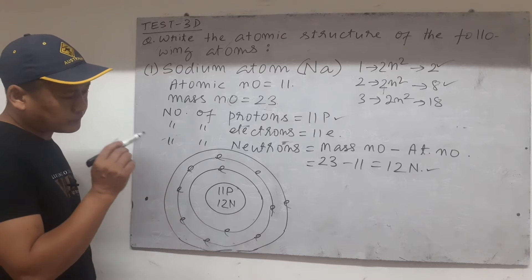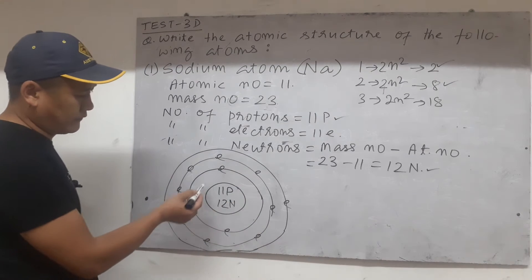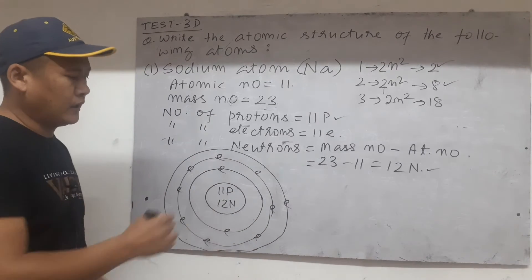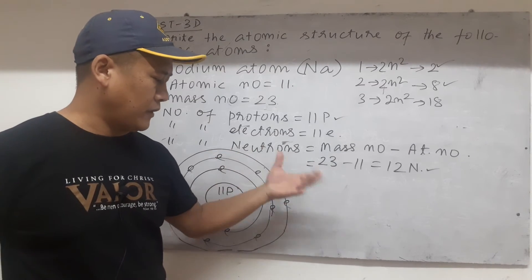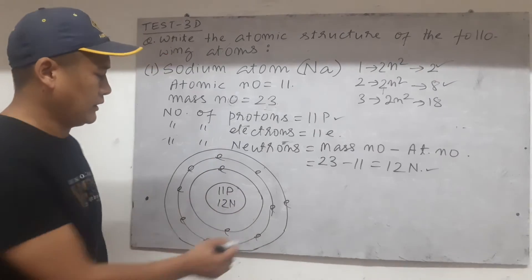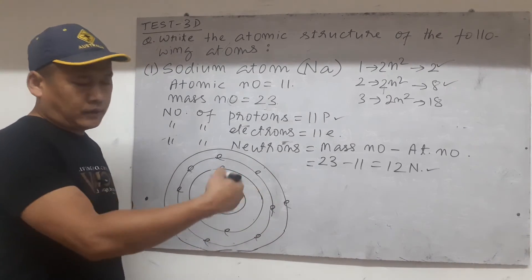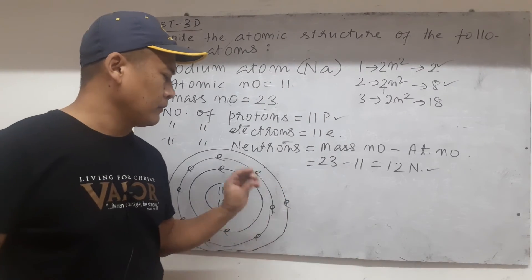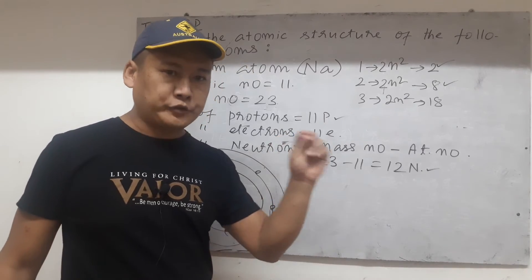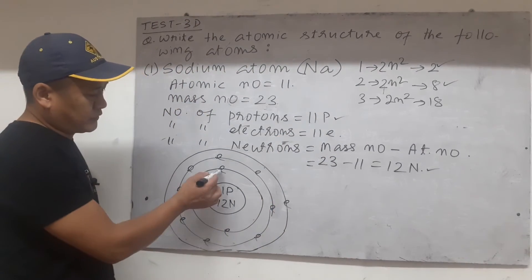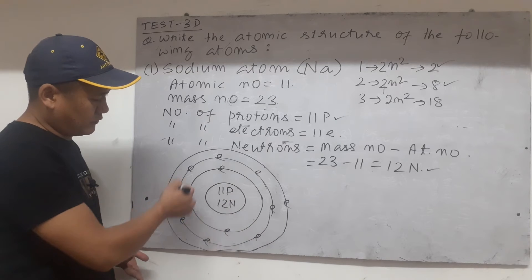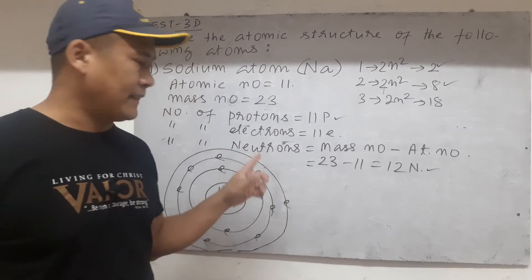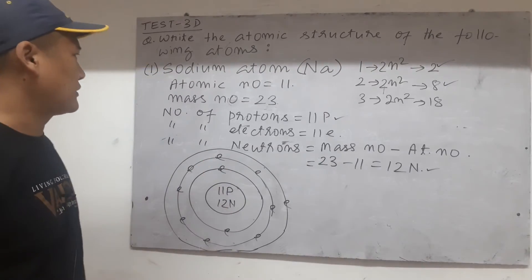Now here, there is only one electron in the last orbit. The first orbit is here, second, and the third orbit is the last orbit. The electrons found in the outermost shell, the last shell — in the third shell in this case, one electron — are called valence electrons. So we know now that sodium has only one valence electron. Valence electron means the electrons in the outermost orbit. So this is the structure of sodium atom.